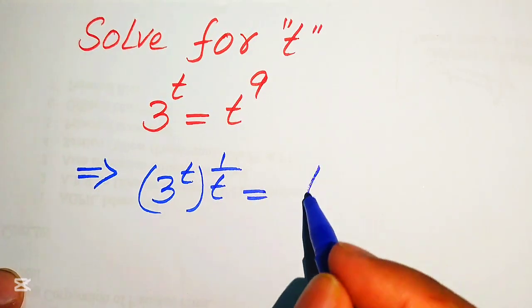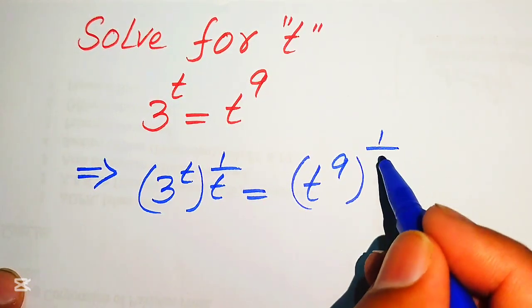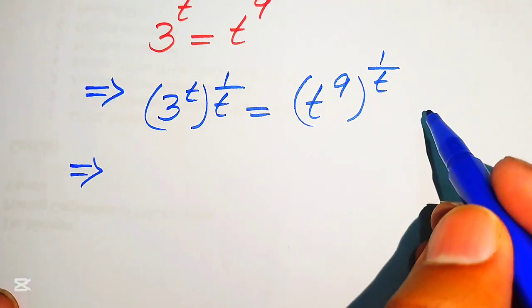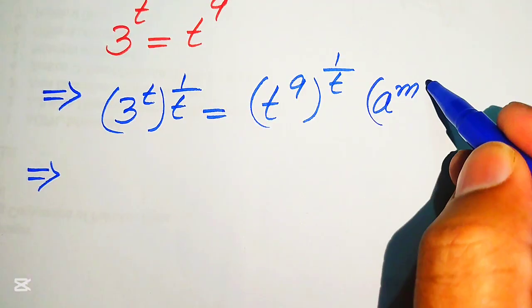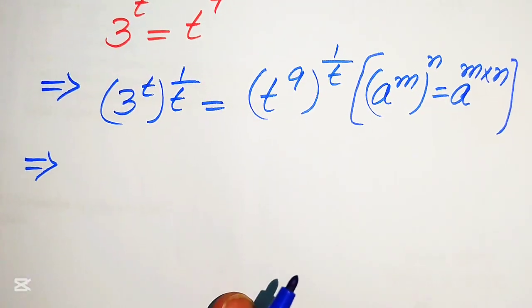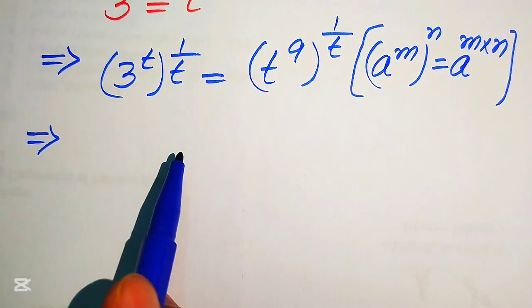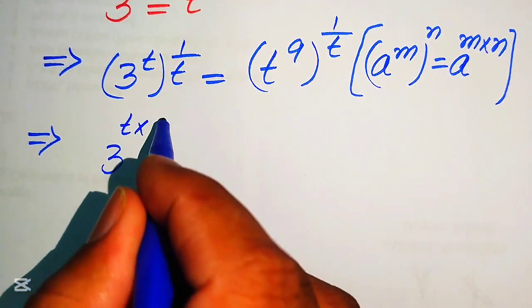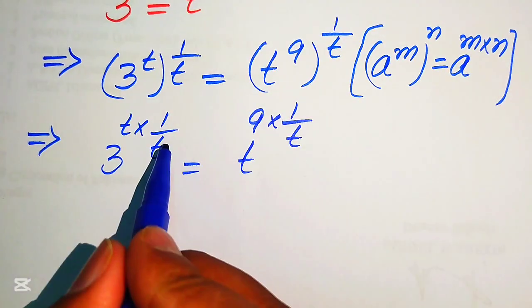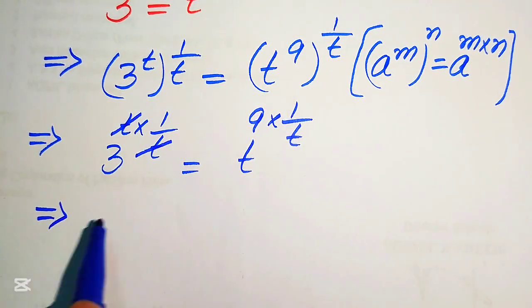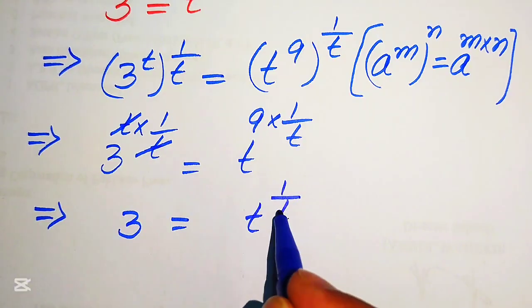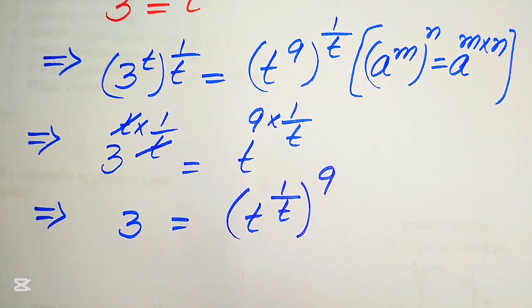When you take the power 1-over-t, the right side becomes t to the power of 9, whole power 1-over-t. We apply the exponent law: (a^m)^n = a^(m×n). So we multiply the exponents: on the left, t times 1-over-t cancels to give 3^1, which is 3. On the right, we get t to the power of (1/t), whole exponent 9.